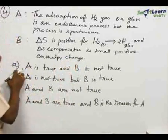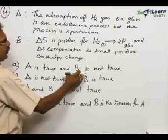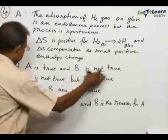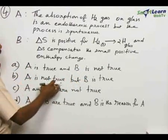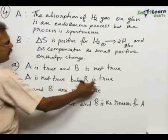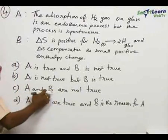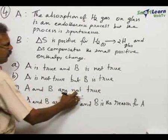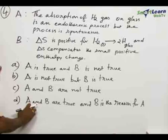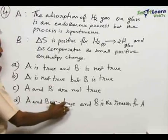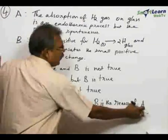Option A: A is true and B is not true. Option B: A is not true but B is true. Option C: A and B are not true. Option D: A and B are true and B is the reason for A.